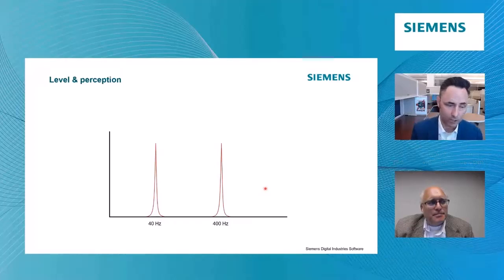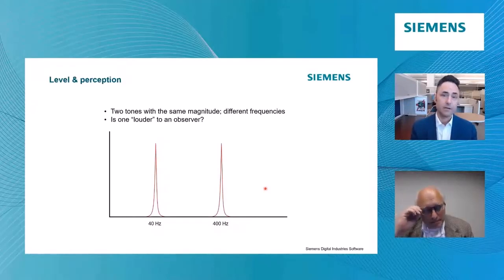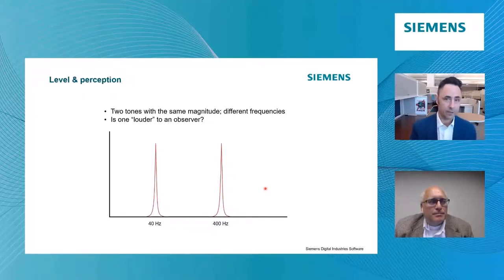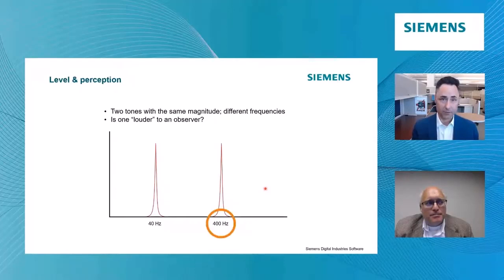So if you have two tones, one at 40 hertz and one at 400 hertz, and I say they're the same magnitude, so we're measuring exactly the same decibel level or pressure level in pascals, is one of these going to be louder to an observer? Well, this is exactly what we talked about, the A-weighting curve, right? One of those is going to be more perceivable to a human being than another, and that's going to be 400 hertz.